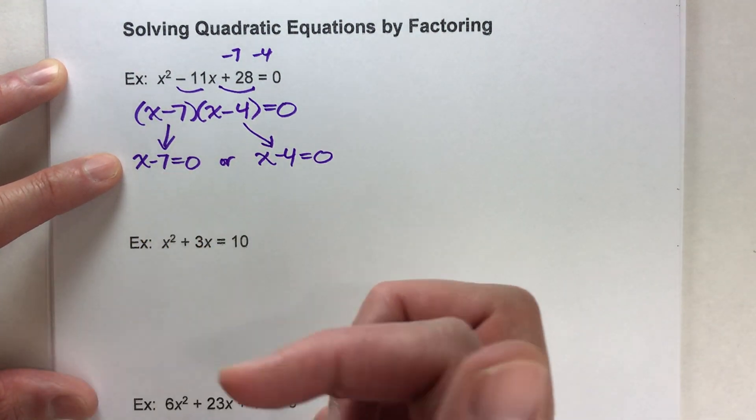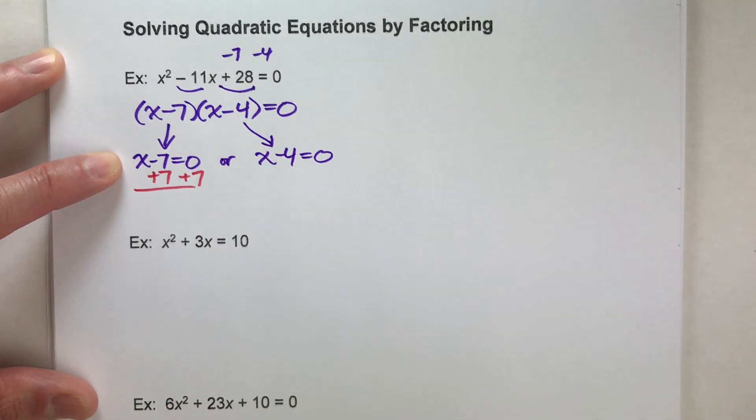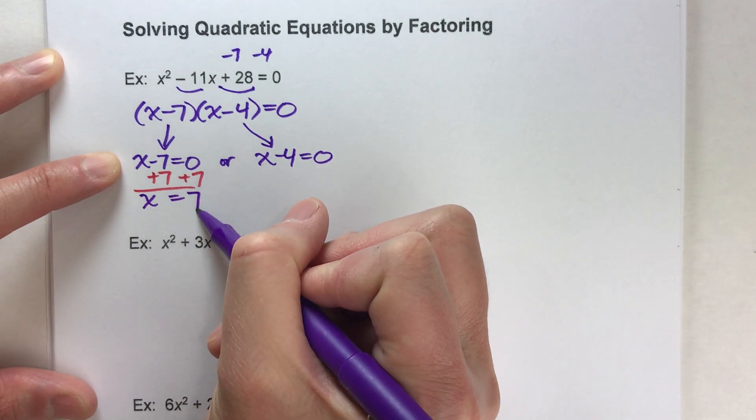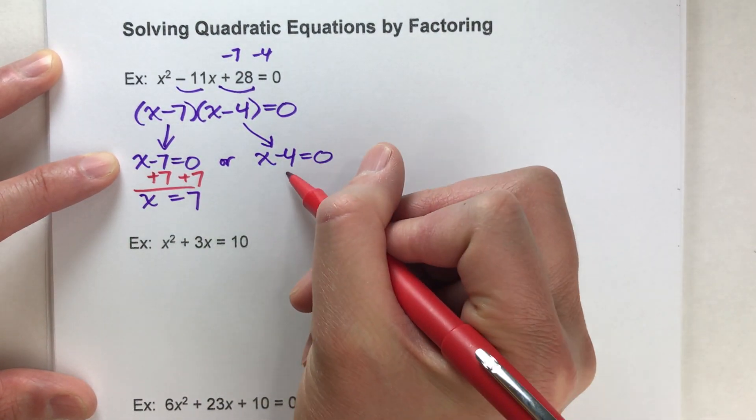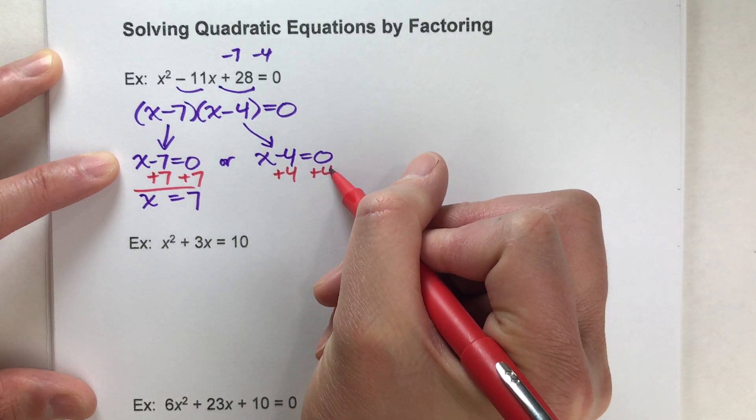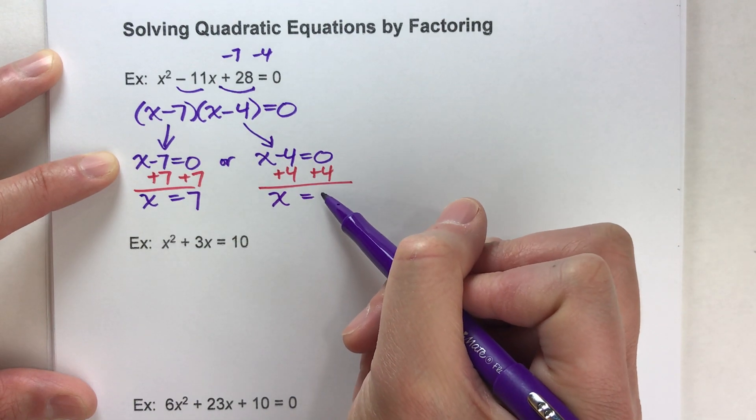Let's start with this one: x minus 7 equals zero. I'm going to add 7 to both sides of the equal sign and I get x equals 7. Now on this other one, x minus 4 equals 0. I'm going to add 4 to both sides. When I do that, x equals positive 4.